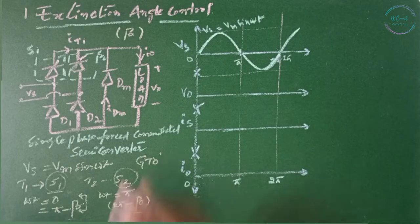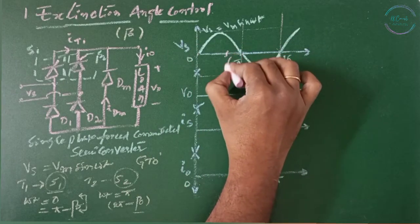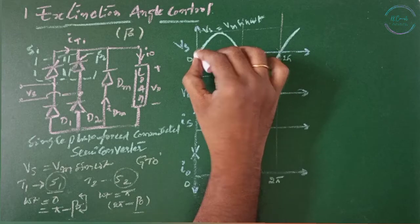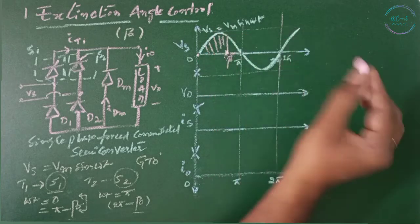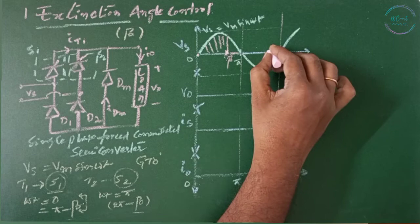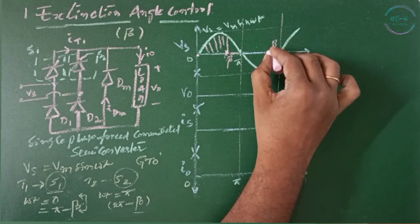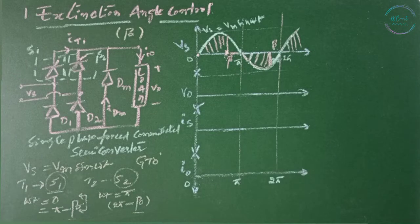Let us consider the waveform. This is omega t equals 0 and we have beta here. Thyristor T1 can turn on here and turn off here. Then this will be the output voltage. Switch one is turned off at beta. Switch two is turned off at beta. So this is the output.